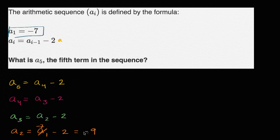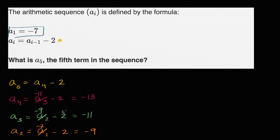That starts helping us out, because if a sub two is negative nine, then a sub three is negative nine minus two, which is equal to negative eleven. Now that we know a sub three is negative eleven, we can figure out a sub four is negative eleven minus two, which is equal to negative thirteen. We know the fourth term is negative thirteen, so a sub five is going to be a sub four — negative thirteen — minus two, which is equal to negative fifteen.